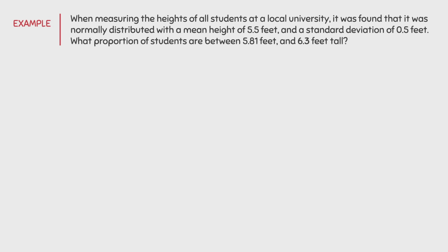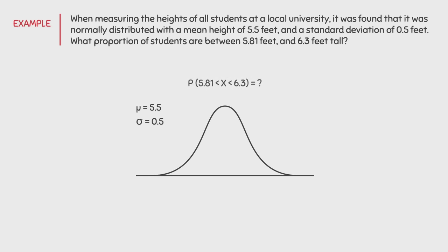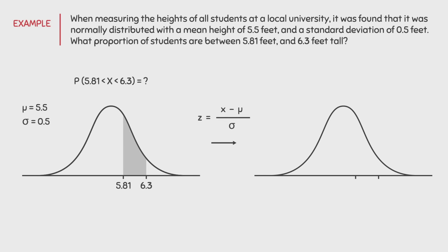Let's do one more example. When measuring the heights of all students at a local university, it was found to be normally distributed with a mean height of 5.5 feet and a standard deviation of 0.5 feet. What proportion of students are between 5.81 feet and 6.3 feet tall? We have a mu of 5.5 feet and a sigma of 0.5 feet. We are looking for the proportion of individuals between 5.81 feet and 6.3 feet tall. Using the standardization formula, plugging in 5.81 gives us a z-score of 0.62, and plugging in 6.3 gives us a z-score of 1.6.